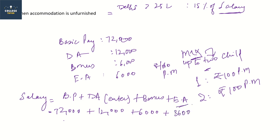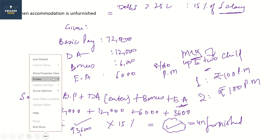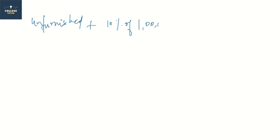This calculation will be shown in your working notes. Whatever amount results from 15% of 93,600 will be your unfurnished accommodation value. For the furnished accommodation, you will also add 10% of the furniture value, which is 10% of 1 lakh = 10,000. So add 10,000 to the unfurnished amount to get the final taxable value for furnished rent-free accommodation.